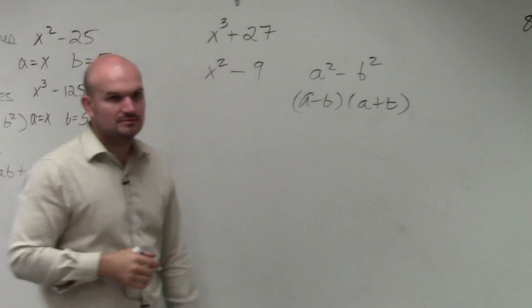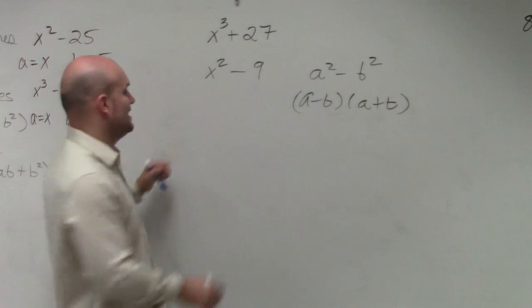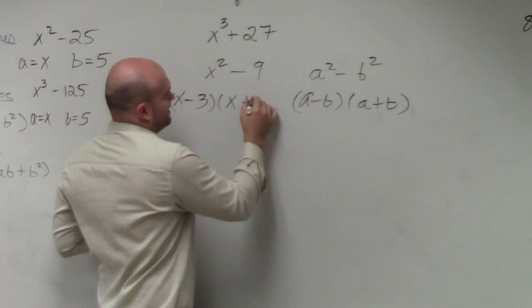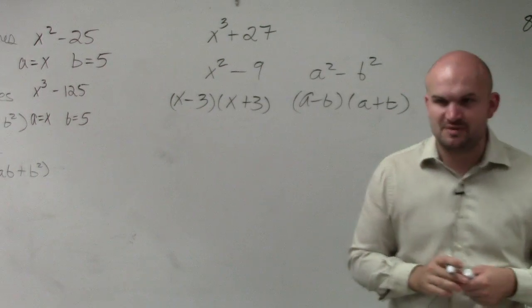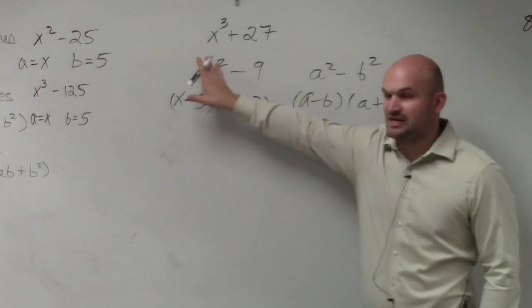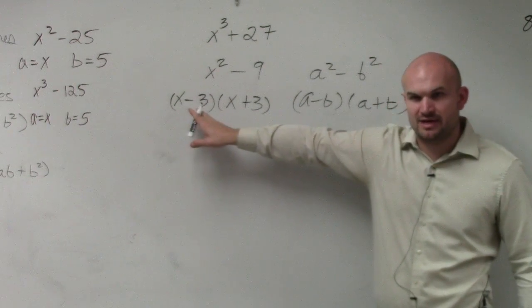Does everybody see that? So if I have x squared minus 9, everybody typically has this understanding that they can factor that out into x minus 3, x plus 3, unless they're talking to the person next to them, which might bring in some confusion. Does everybody kind of see this point in this case?